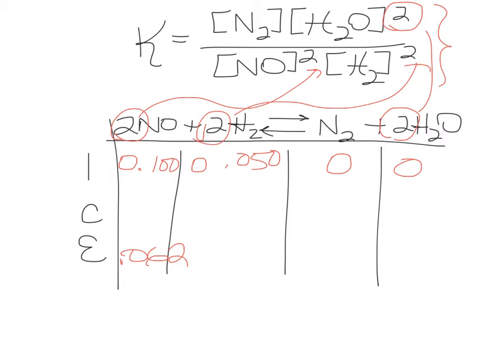So any time you have both the initial and the equilibrium concentration of any of the components in a chemical reaction, you can do simple math. I want you to imagine that there's an addition-subtraction line here. And so what is the difference between 0.1 and 0.062? It is 0.038.